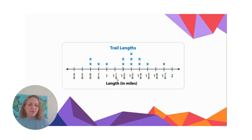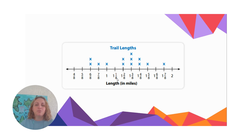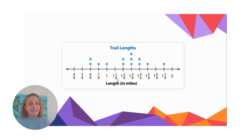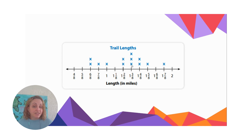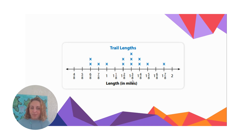What is the most common distance of trail? This is another question we can answer about our line plot. When we're looking for the most common data point, we look for the data point that appears the most — in this case, the one with the most x's. That's one and three eighths miles with three x's. So the most common trail length is one and three eighths miles.